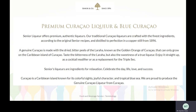Now we will talk about premium Curaçao liqueur and blue Curaçao. Genuine Curaçao is made with the dried bitter peels of the Laraha, known as the golden orange of Curaçao, that can only grow on the Caribbean island of Curaçao — known for its colorful sights, joyful character, and tropical blue sea.